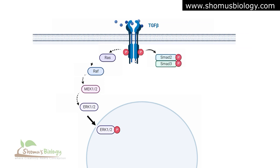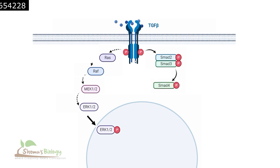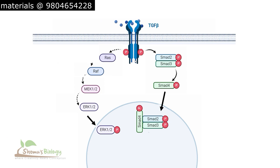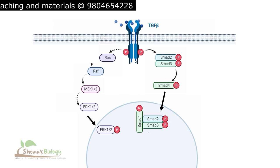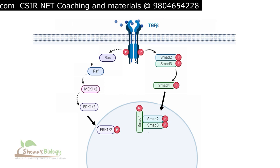In parallel, the phosphorylated cytoplasmic site of the TGF-beta receptor phosphorylates SMAD-2 and SMAD-3, which form a duplex. This SMAD-2/SMAD-3 complex then phosphorylates SMAD-4. The activated SMAD-4 also migrates into the nucleus, where we now have a combination of phosphorylated SMAD-2, SMAD-3, and SMAD-4.